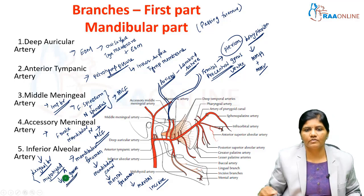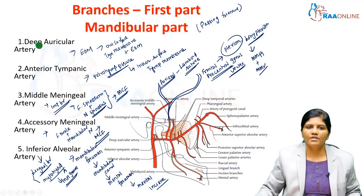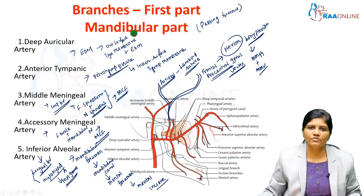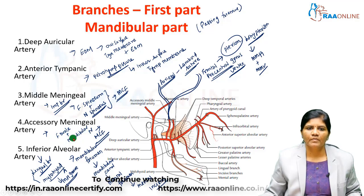The mylohyoid artery runs in the mylohyoid groove and accompanies the mylohyoid nerve, mainly supplying the lower jaw — the chin, incisor, molar, and premolar areas. In summary for the first part branches: deep auricular artery — external auditory meatus — outer surface of tympanic membrane; anterior tympanic artery — petrotympanic fissure — inferior surface of tympanic membrane; middle meningeal artery — foramen spinosum — frontal and parietal branches, closely related to the pterion; accessory meningeal artery — foramen ovale with mandibular nerve — middle cranial fossa; inferior alveolar artery — mandibular foramen and mental foramen — with mylohyoid and lingual branches.